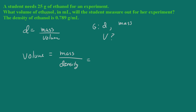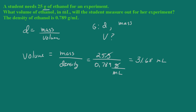I'll check and make sure my units are correct. My mass is in grams, and my density is in grams per milliliter. I do want the volume in milliliters. So the mass is 25 grams, divided by the density, which is 0.789 grams per milliliter. Grams cancel, and we're left with milliliters. 25 divided by 0.789 gives us 31.68 milliliters. We've only got two significant figures here, so we round this to 32 milliliters.